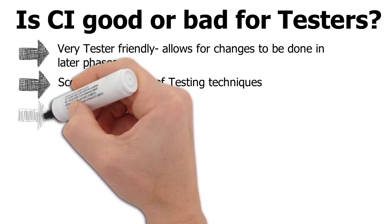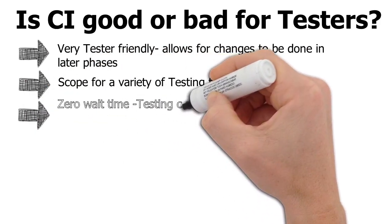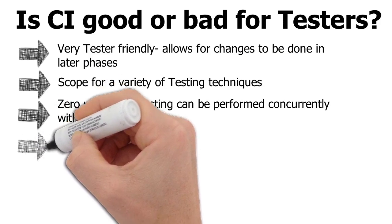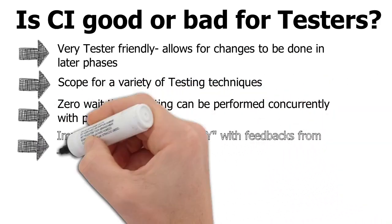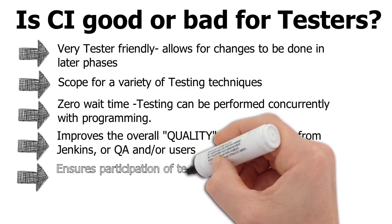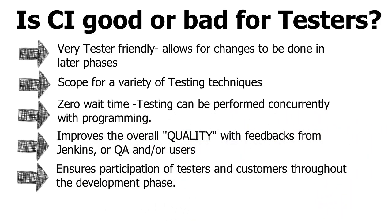CI is very tester-friendly. It allows making changes even in later phases, so at any point in time we can go ahead, make changes, and test them. There is scope for a variety of testing techniques, as listed earlier. There is zero wait time — testing can be performed in parallel to development. It improves overall quality with feedback from Jenkins, QA, and users. And last but not least, it ensures participation of testers and customers throughout the development phase, with their feedback incorporated back into the quality cycle. Hence we receive a very high quality product.